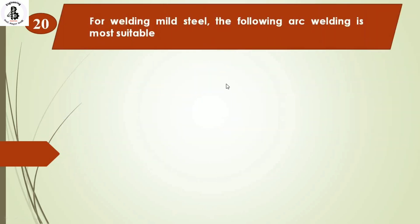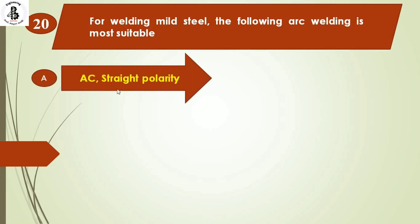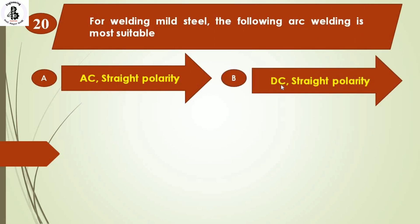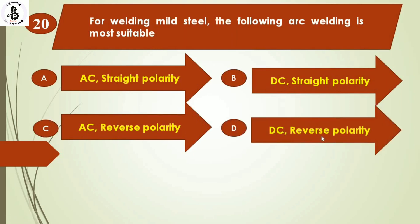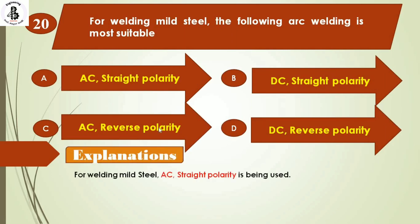Last question: for welding mild steels, the following arc welding is most suitable: Option A: AC with straight polarity. Option B: DC with straight polarity. Option C: AC with reverse polarity. Option D: DC with reverse polarity. For maximum applications with mild steel, AC with straight polarity is used. So the answer is option A.